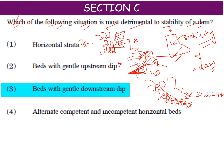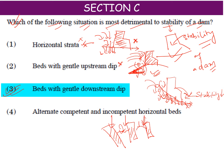So the answer is definitely the third option. Now the fourth option is alternate competent and incompetent horizontal beds. In this case, you can use cementing material to strengthen the horizontal strata, but in the downstream dip case you cannot. So in that case it will definitely be the most detrimental to the stability of a dam. The answer is third. Very clear.